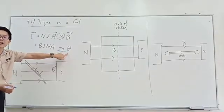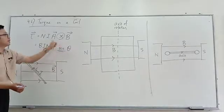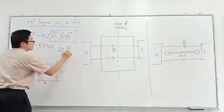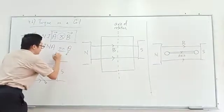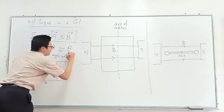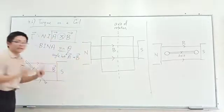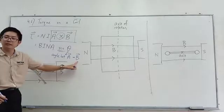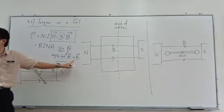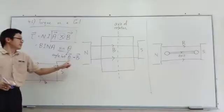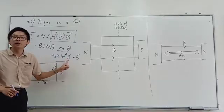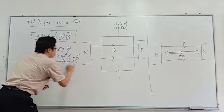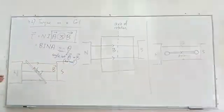And this theta is the angle between A and B — we need to know what crosses what. This is A cross B. So theta is the angle between A and B. What is A? Area. What is B? Magnetic field. But be careful — this area is special. This area is the normal to the area, not the plane. This is actually the normal line.